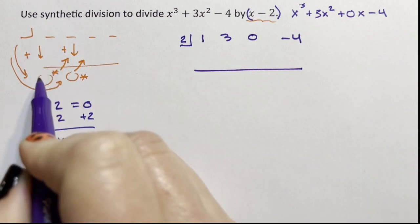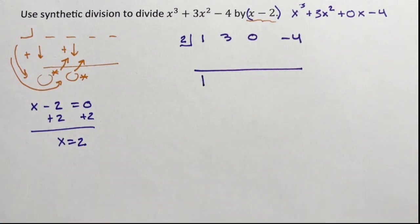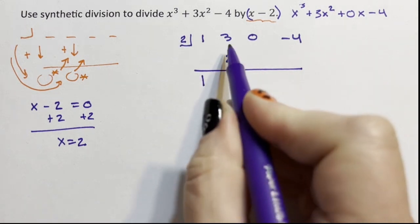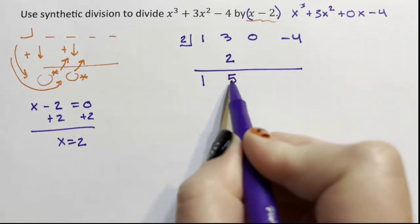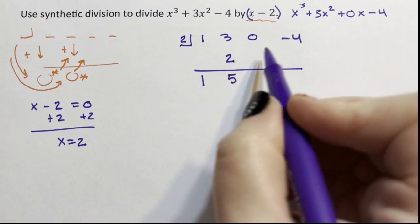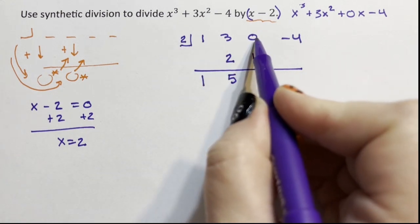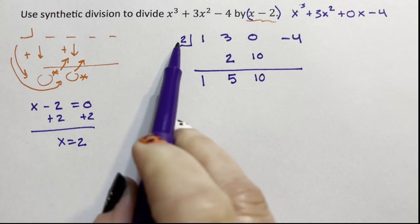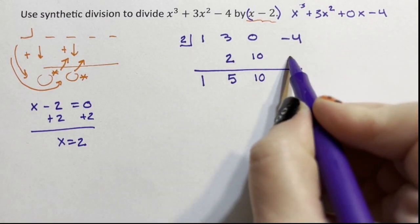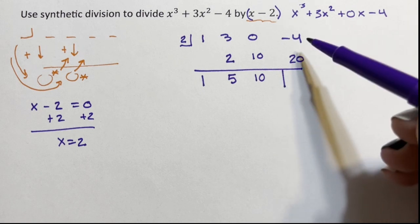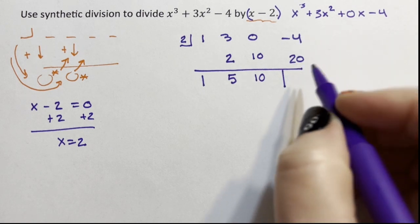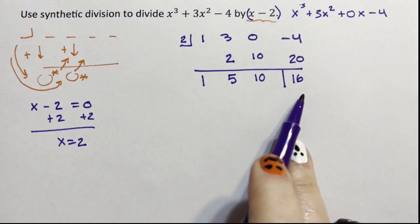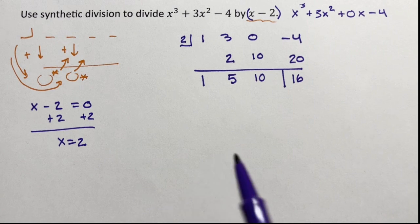So we add down. Well, there's nothing here to add to the 1, so the 1 comes down. 2 times 1 is 2. Now we add down. 3 plus 2 is 5. We multiply. 2 times 5 is 10. Now we add down. 0 plus 10 is 10. Now we multiply. 2 times 10 is 20. And now we add down. Negative 4 plus 20 is 16. And I kind of created another box. I start with a box, I end with a box.